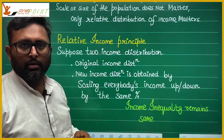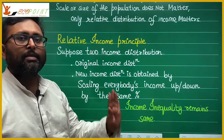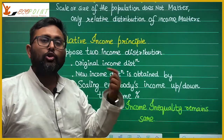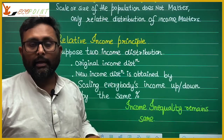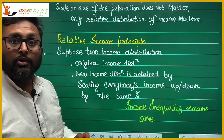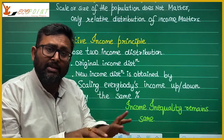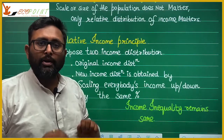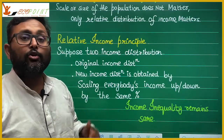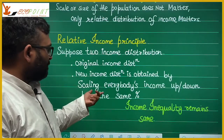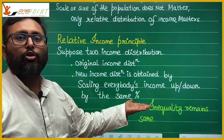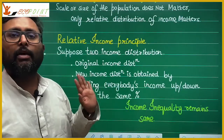In the second distribution, everybody's income is 10% more. So my income becomes 110 and your income becomes 220. Income inequality doesn't change — it remains the same. The main point is that income levels per se are not important; what is important is the income distribution. When you obtain a new income distribution by scaling everybody's income up or down by the same percentage, income inequality doesn't change.